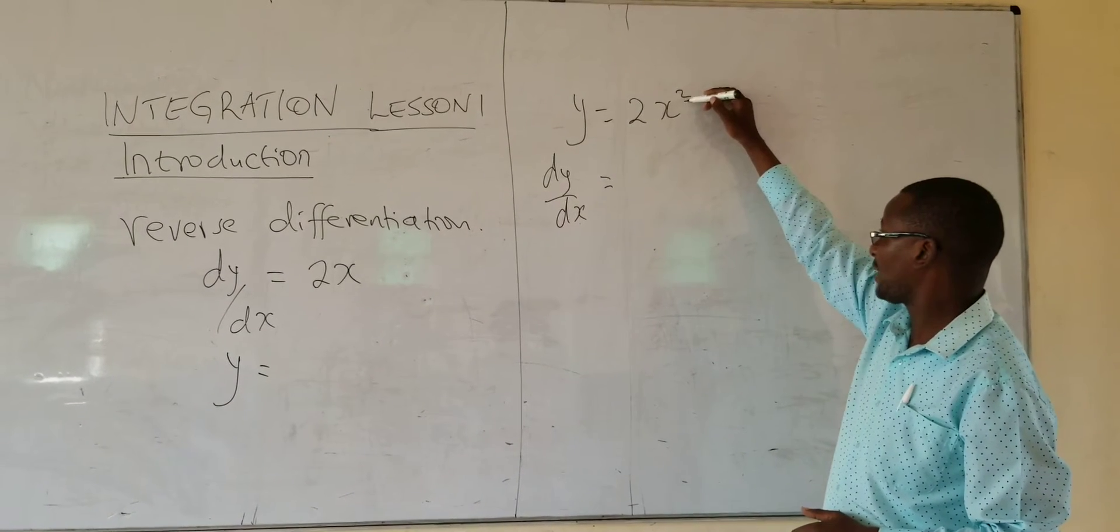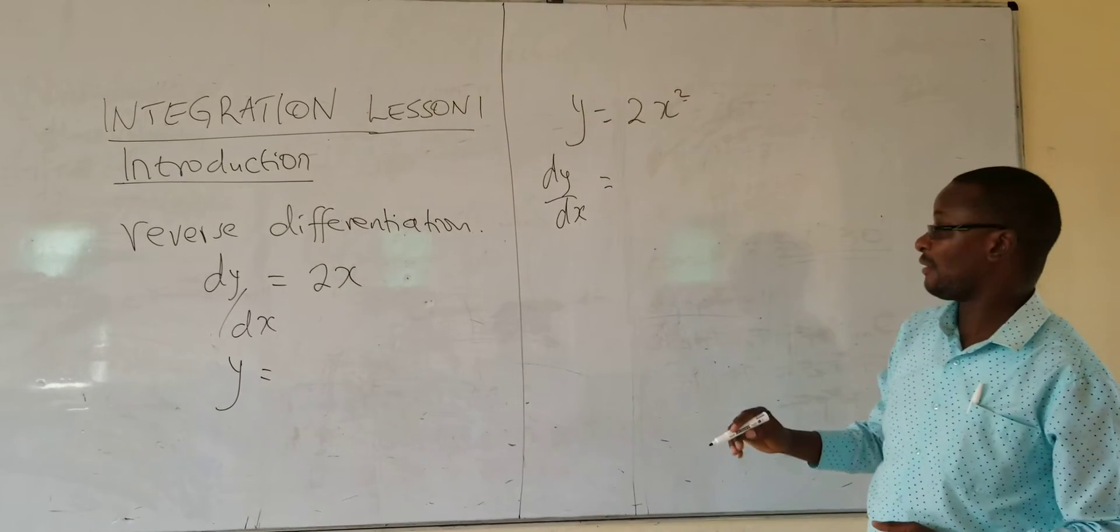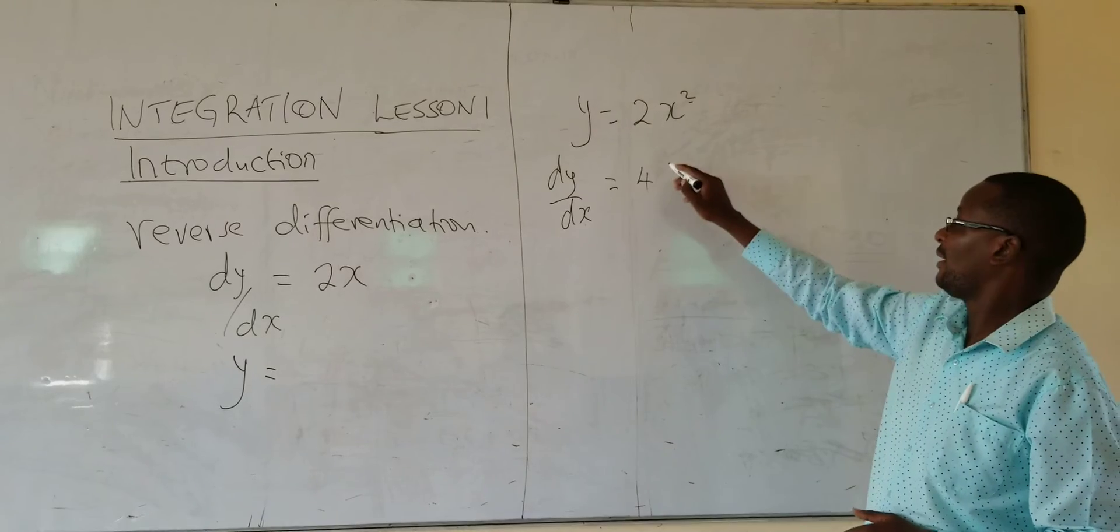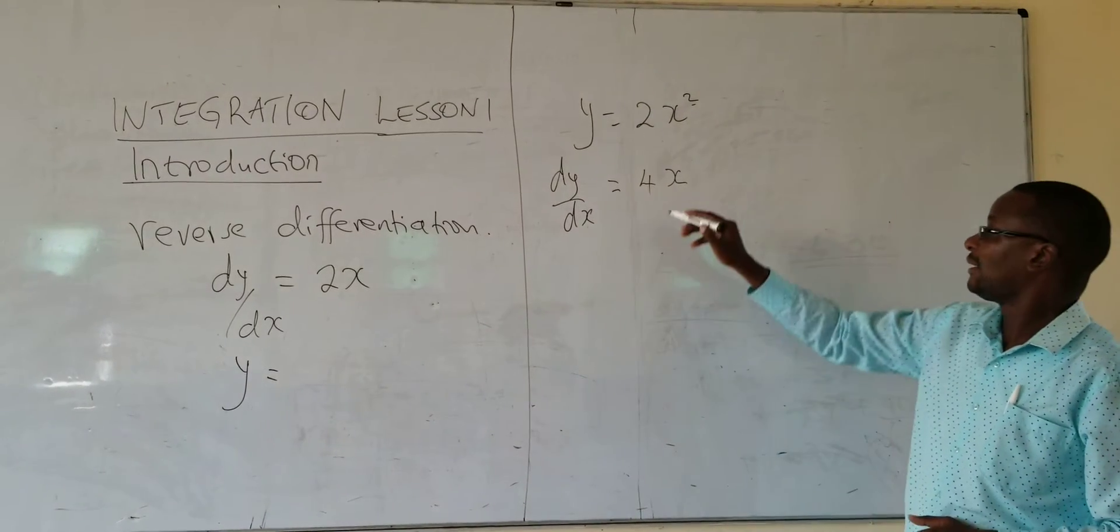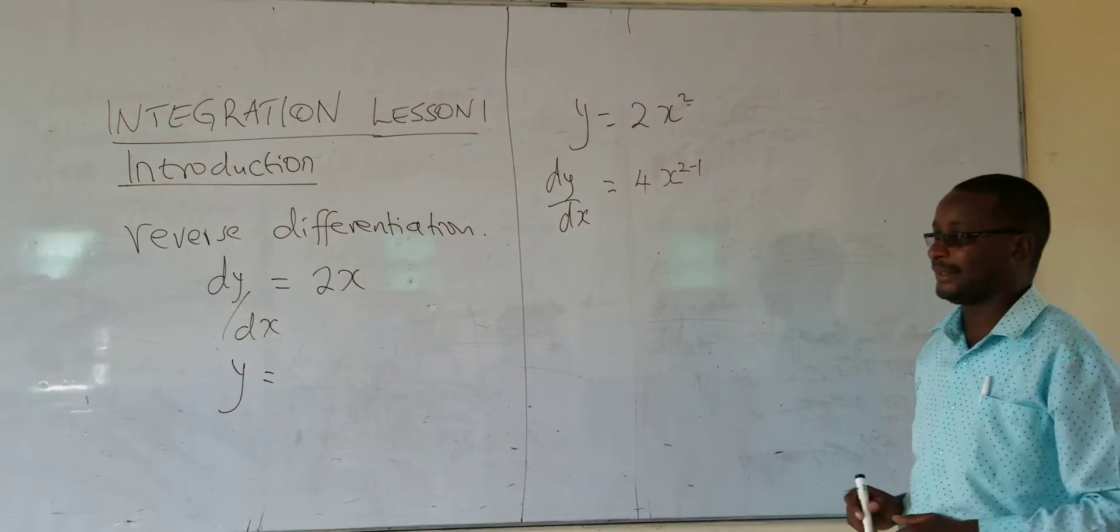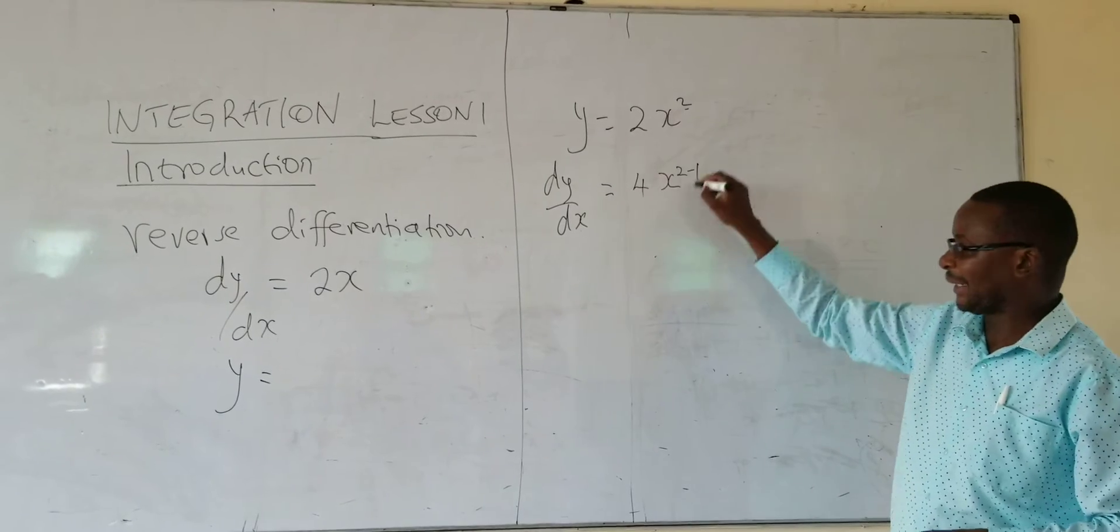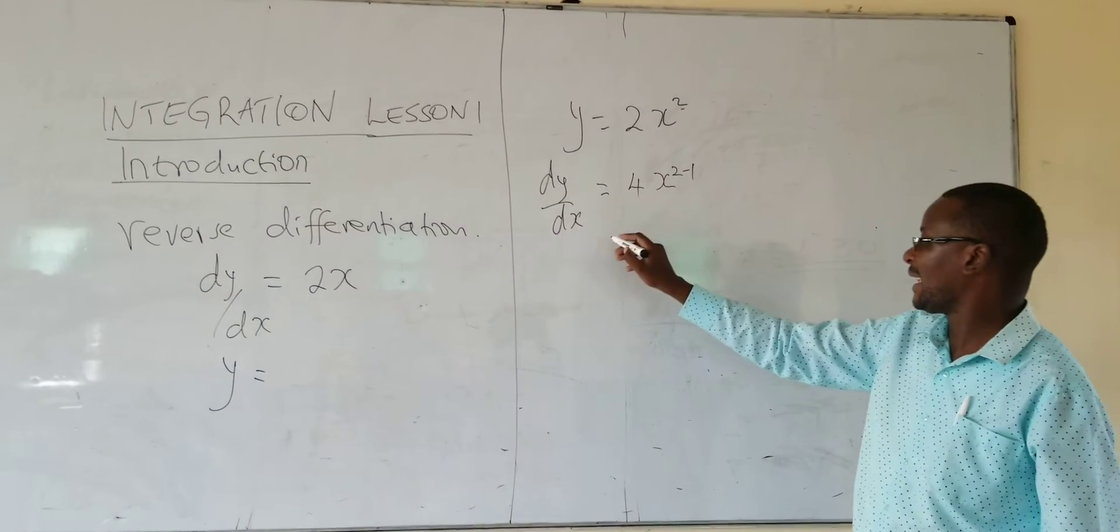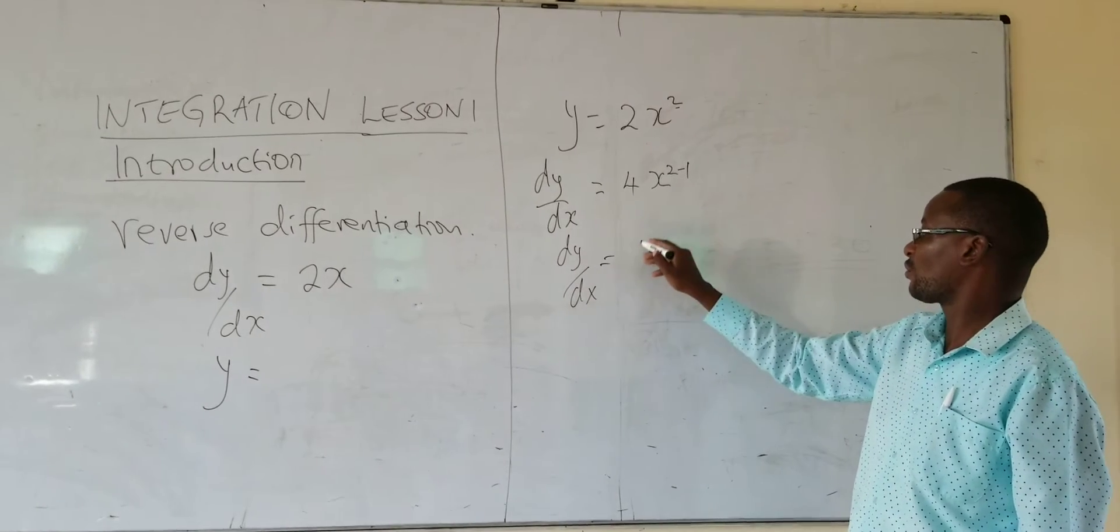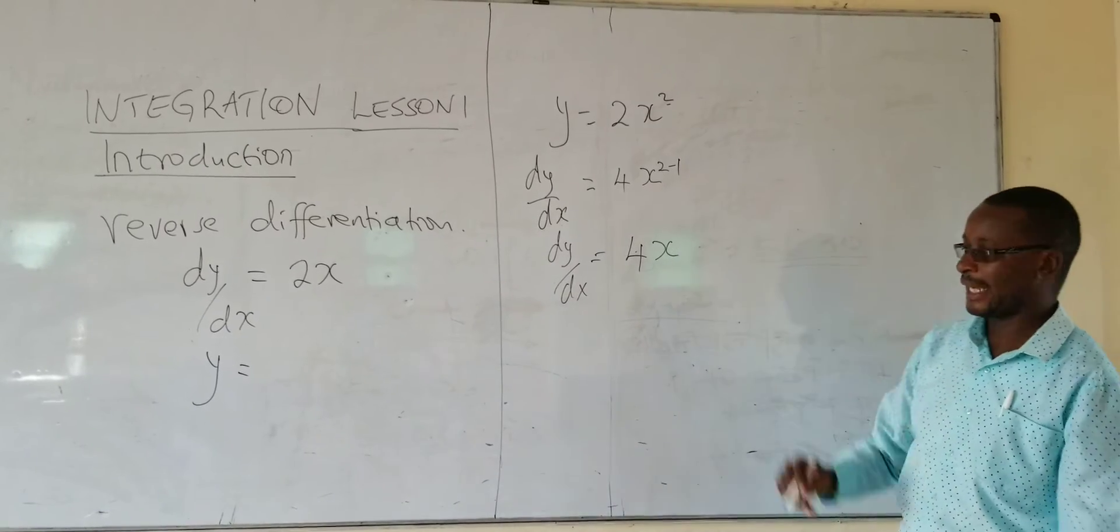What you are doing, you are multiplying these two. The power and the coefficient of x to get 4. Then x comes back to power 2 and then we were subtracting power. We were subtracting 1 from the power. So this is what we were doing to get dy over dx. And I will get here dy over dx is equal to 4x because it will be x power 1.